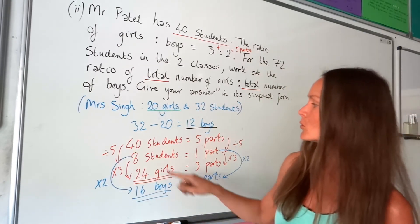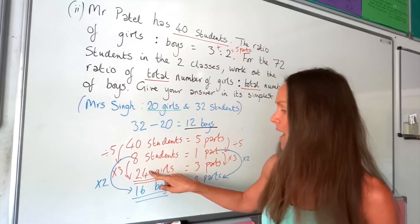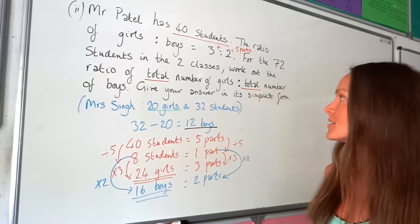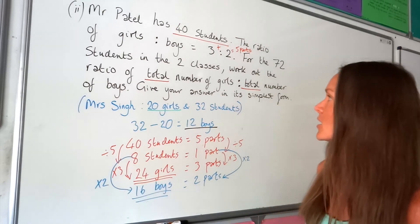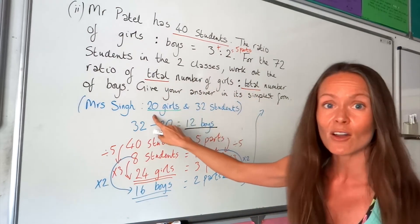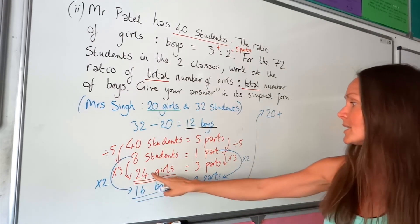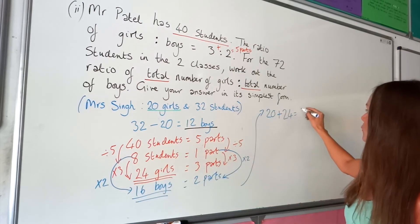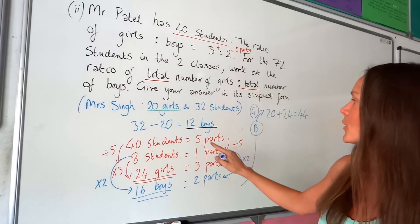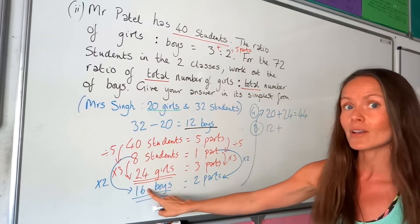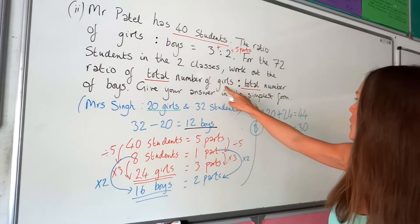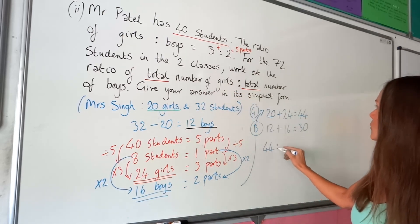Alternatively, you could do total students minus girls to get the same answer for boys. Now that we know all the girls and boys in both classes, we can write down the ratio. For the total girls: 20 from Mrs. Singh's class plus 24 from Mr. Patel's class gives 44 girls altogether. For boys: 12 from Mrs. Singh's class plus 16 from Mr. Patel's class gives 30 boys. So the ratio is 44 to 30.